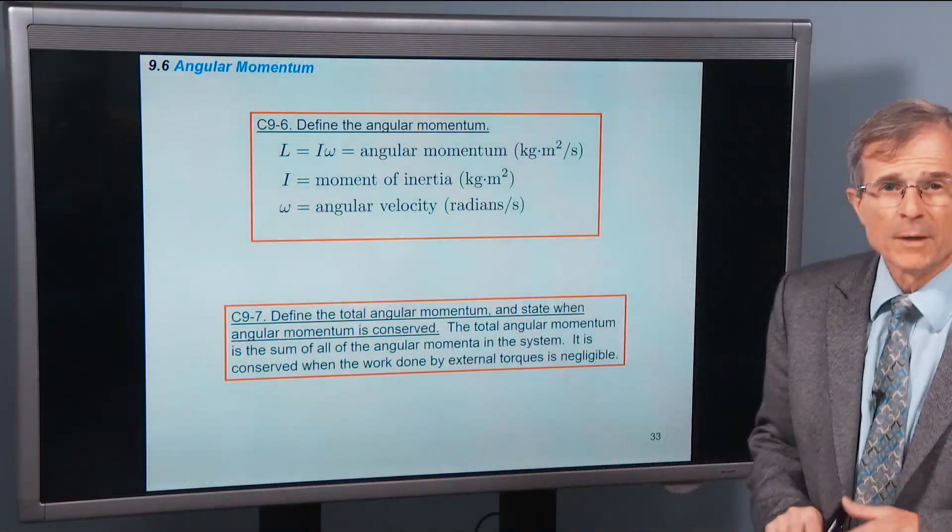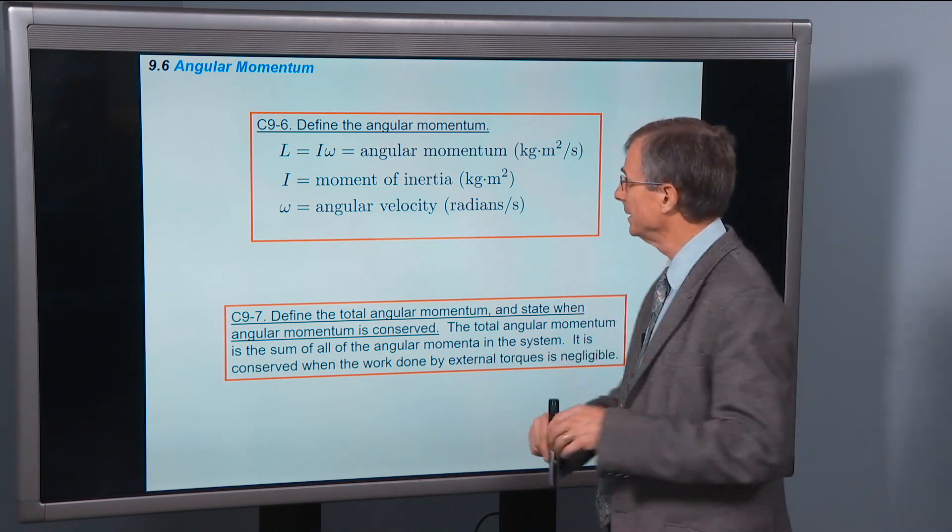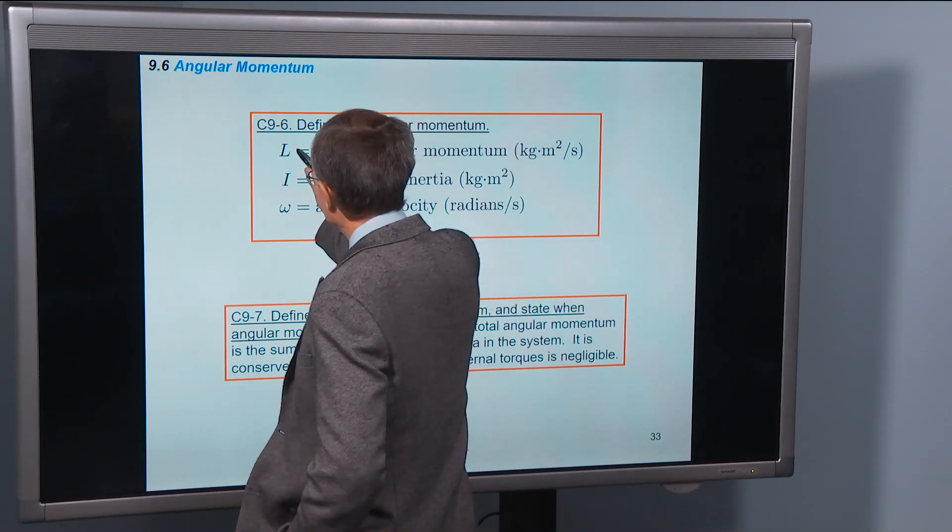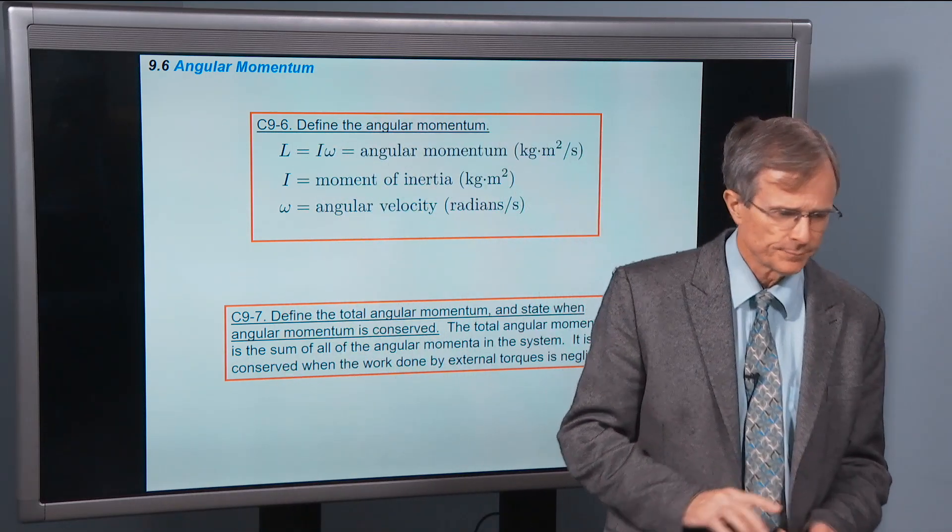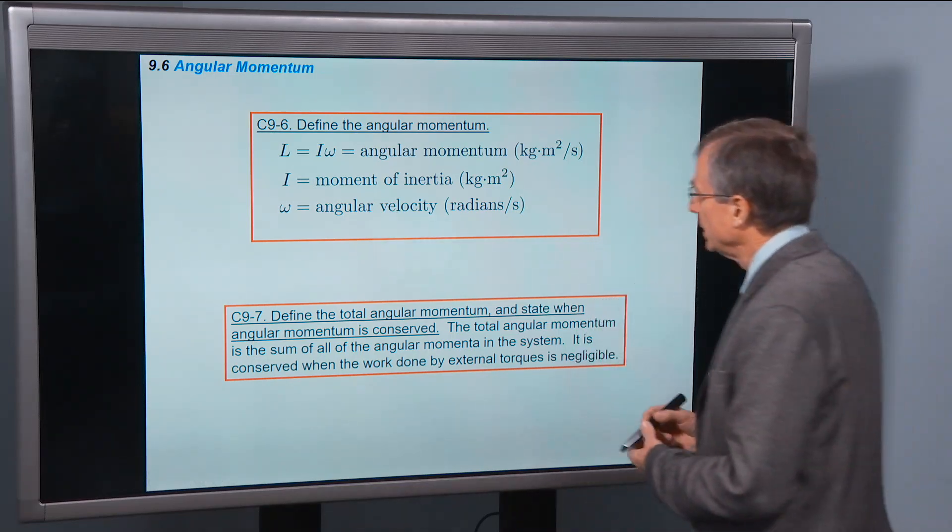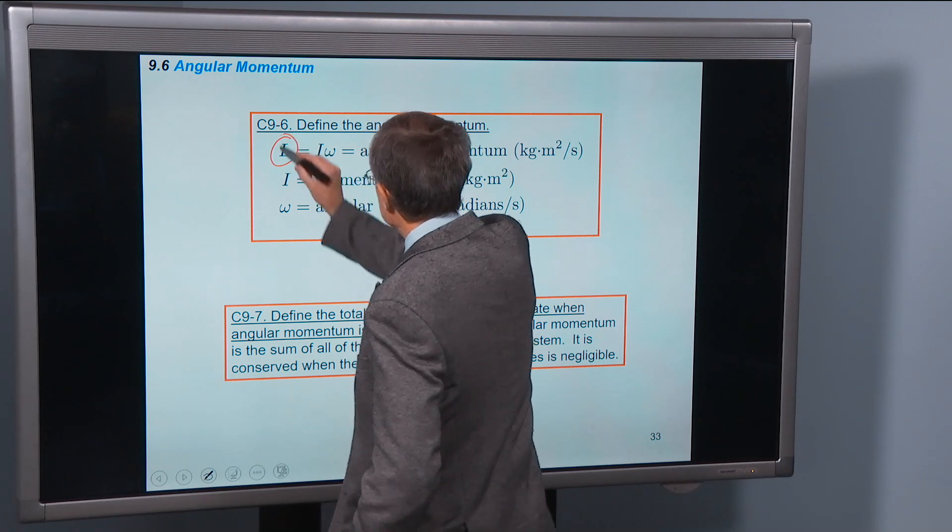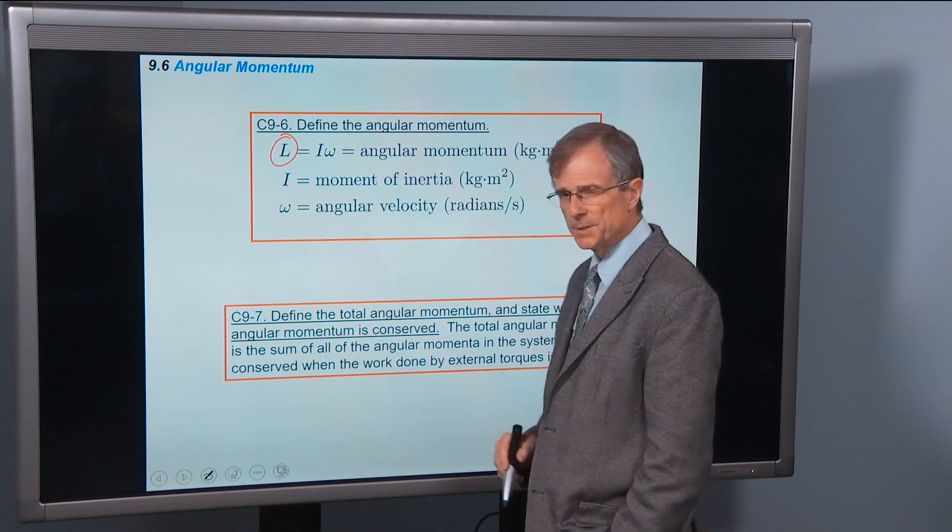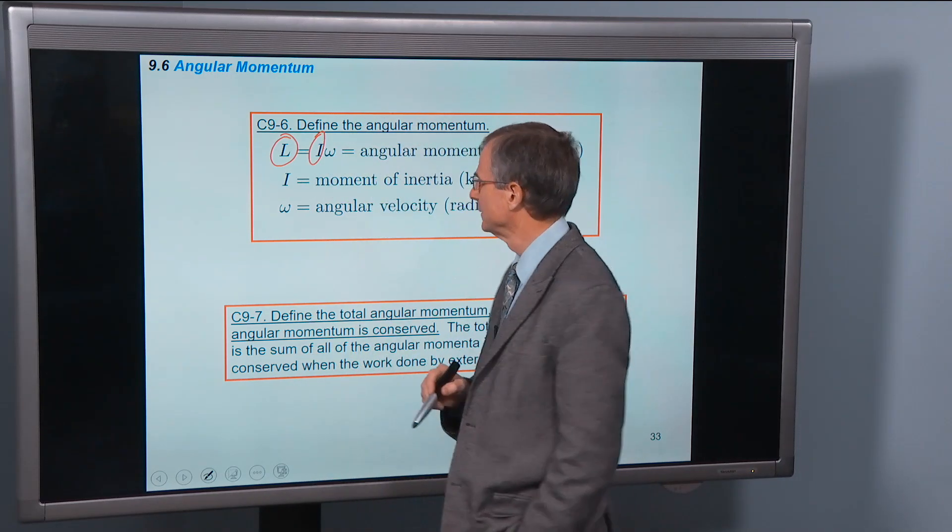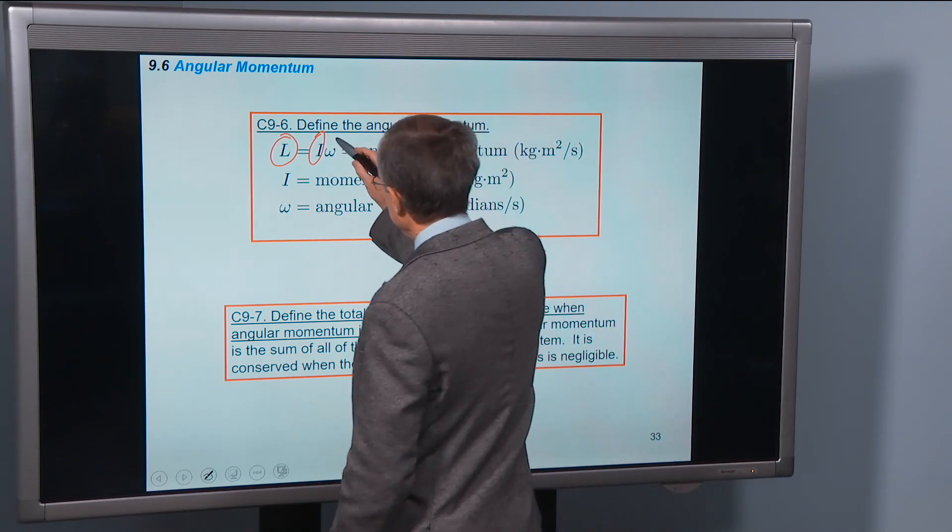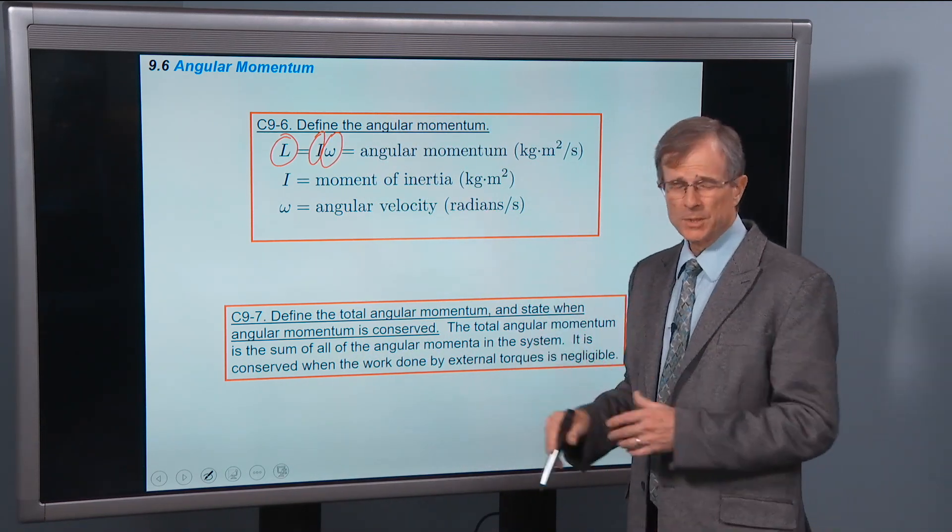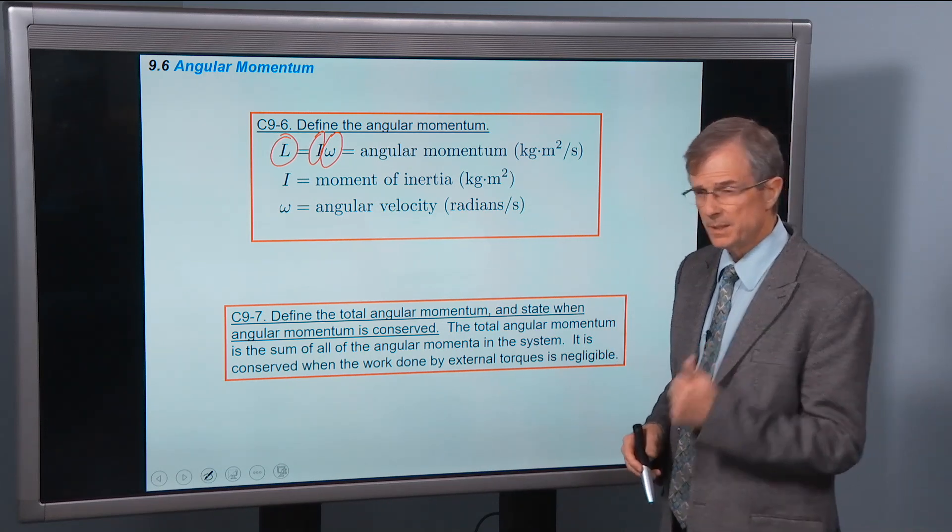Okay, finally, as promised, the definition of angular momentum. It's denoted by the letter L, and this is angular momentum. It's the product of two things, the moment of inertia and the angular velocity. You say, well, is there an analogy with translational motion? And I say, yes, there is.